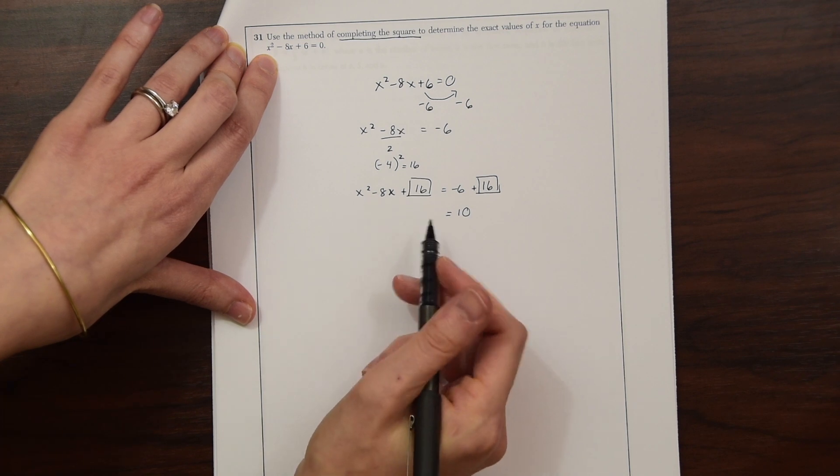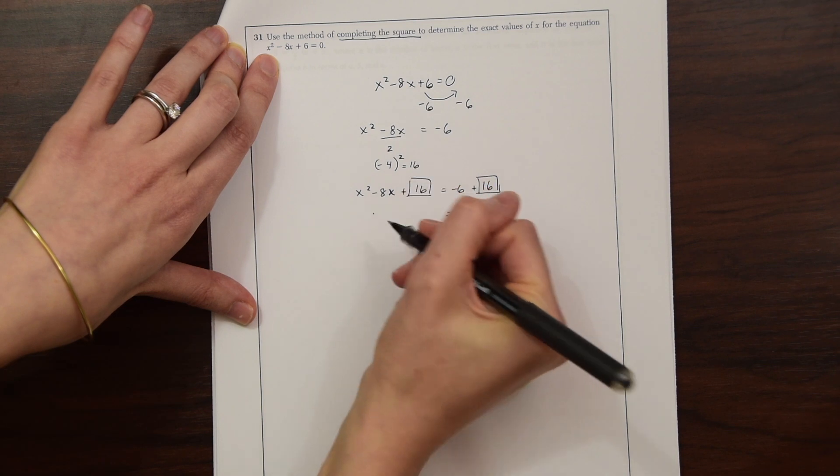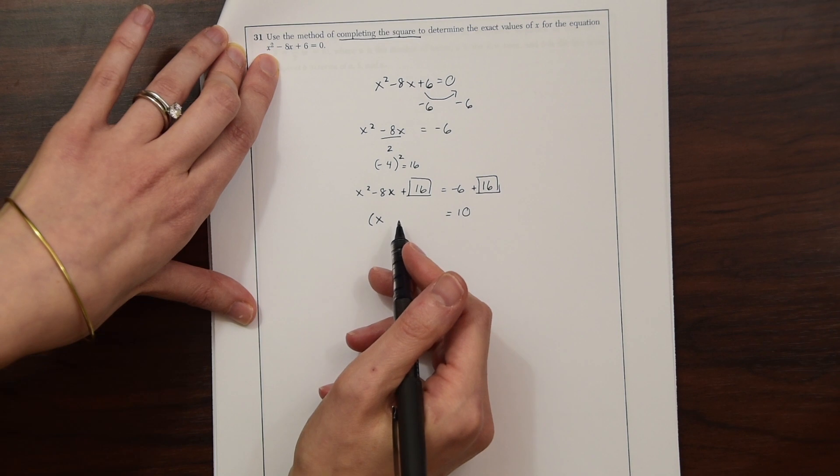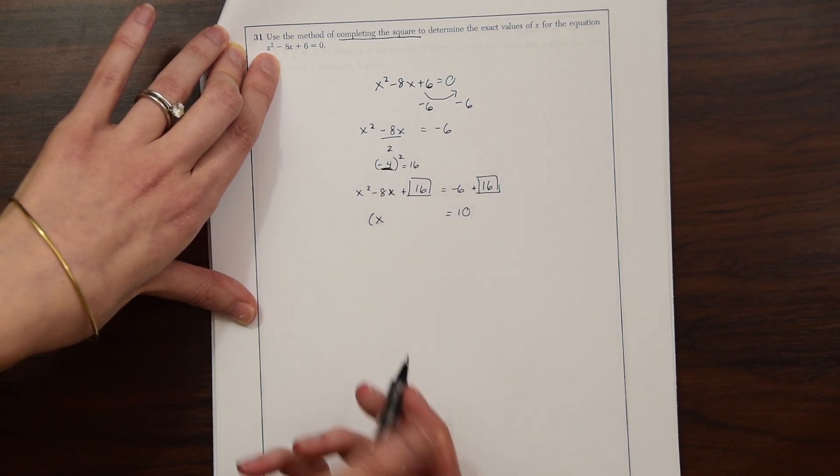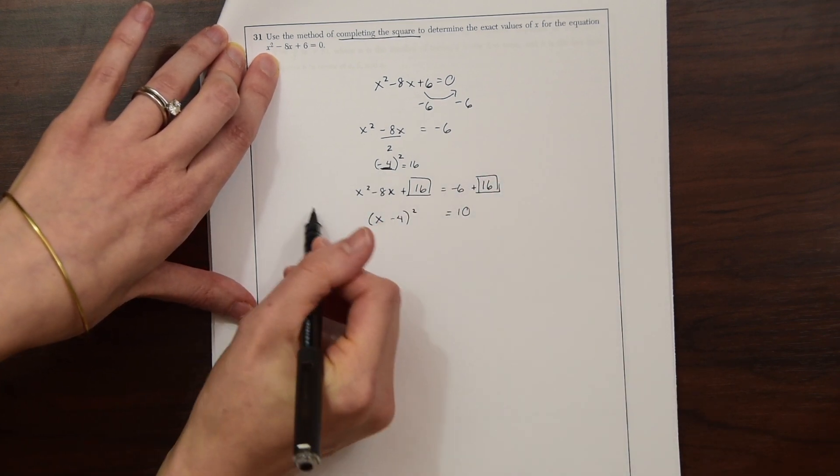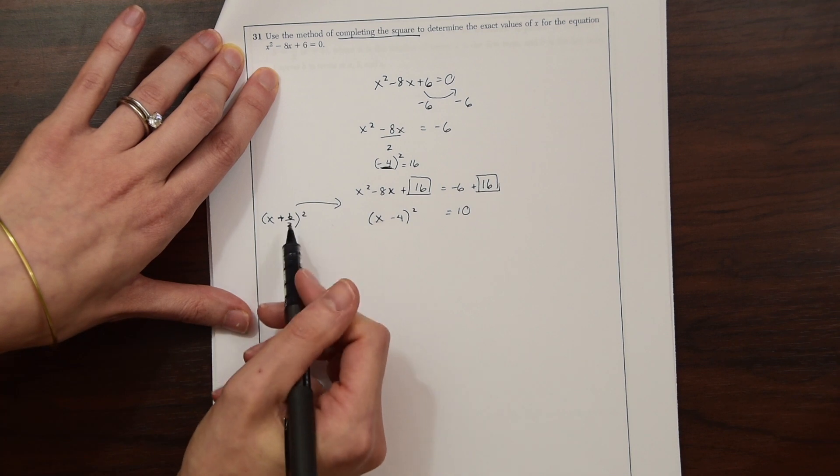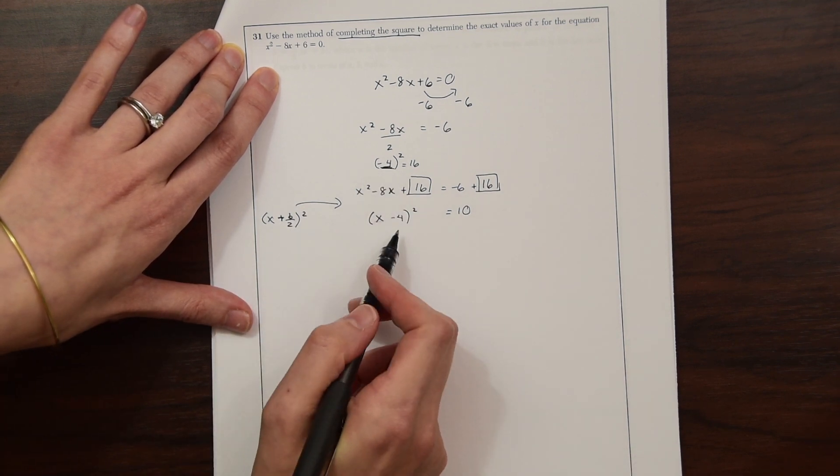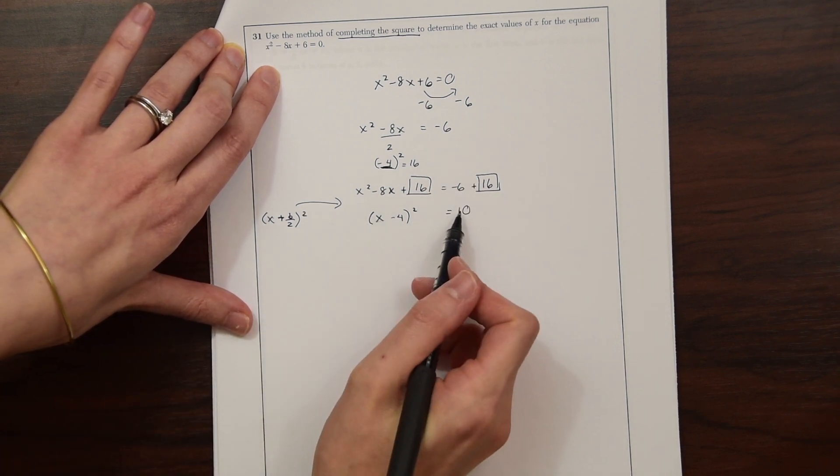And then over here, we're going to rewrite this. So the way to rewrite this is by using the unknown variable x, and then using the number we got here, and then squaring it. So here we got minus 4. So minus 4 squared. So in case you're like, how'd you get that? This always just follows the formula x plus b over 2 squared, right? In this case, it was a minus, so that's why this is minus.